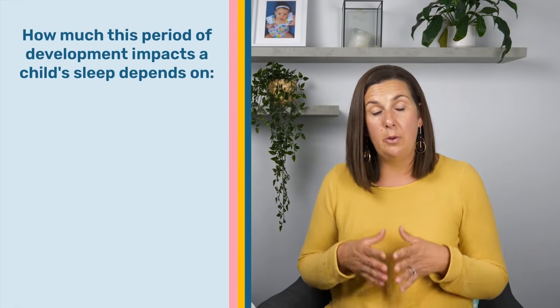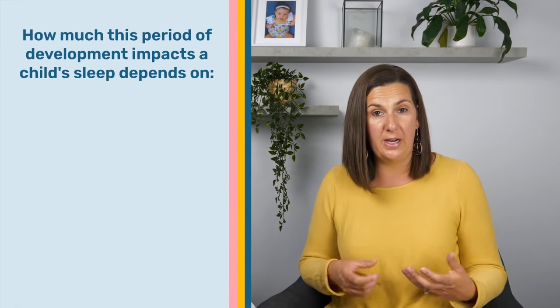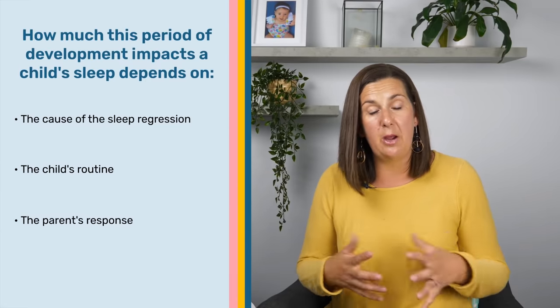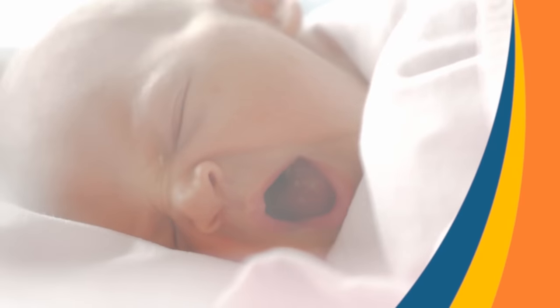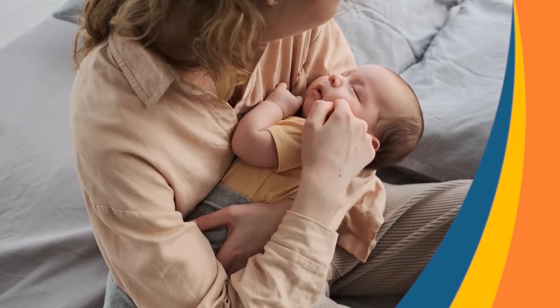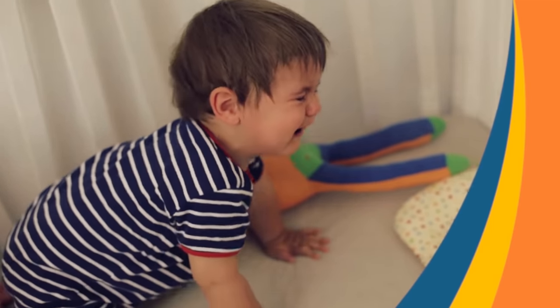The length of time your little one will experience a sleep regression can depend on multiple factors — the cause, the child's skill, as well as your response during these regressions. For example, when a little one is going through the four-month sleep regression, if they are able to fall asleep independently and link sleep cycles, that regression will be significantly shorter. But if they need your help to fall asleep and stay asleep, then that sleep regression becomes basically a long-term, permanent thing, because their sleep patterns have changed and they now wake between cycles needing your assistance.